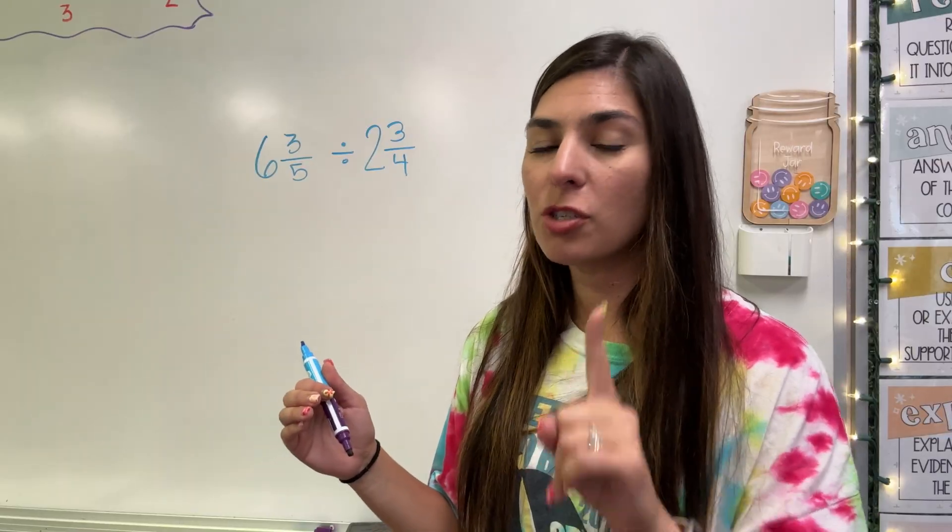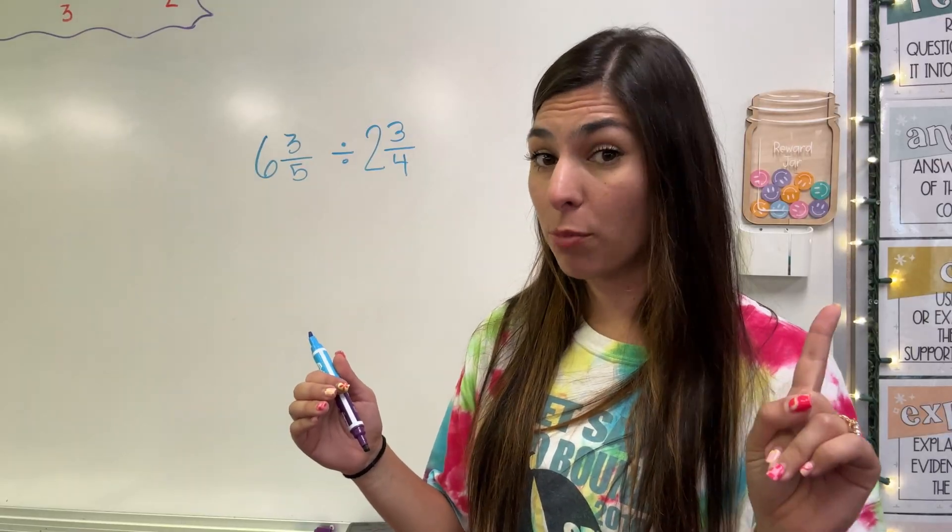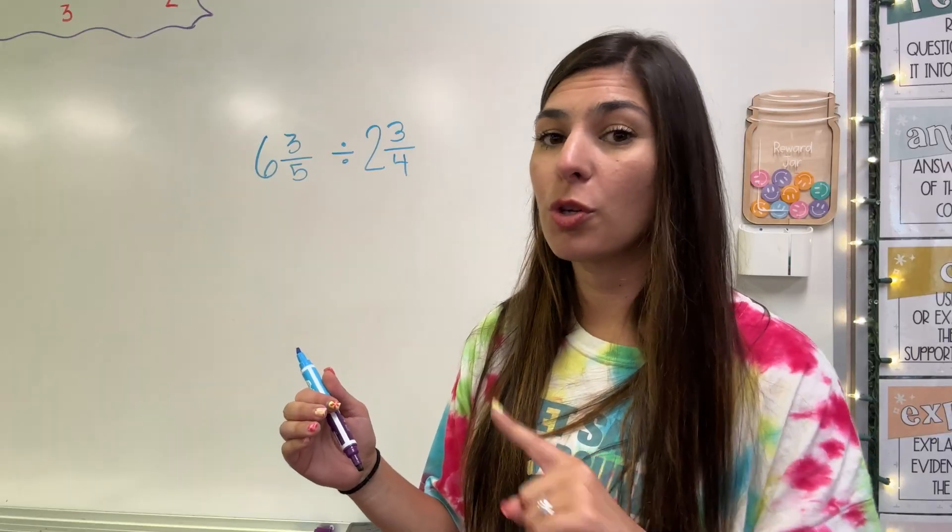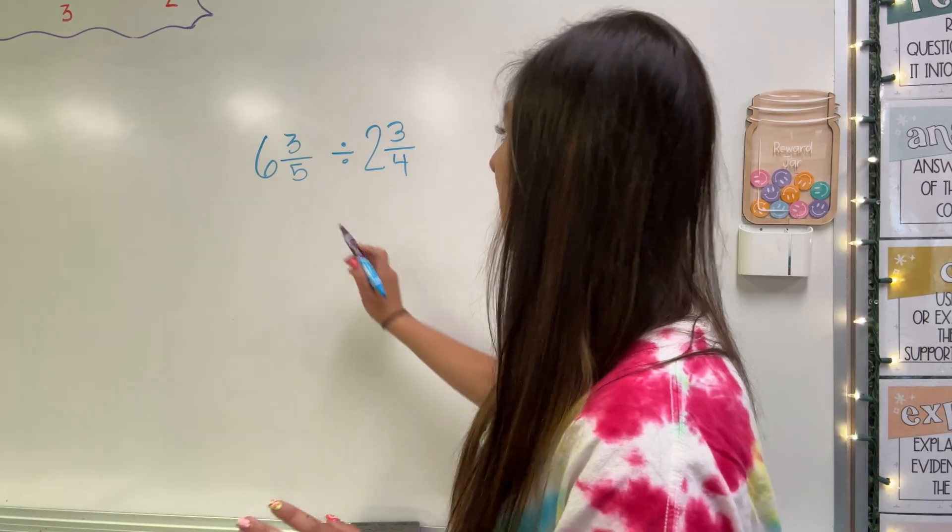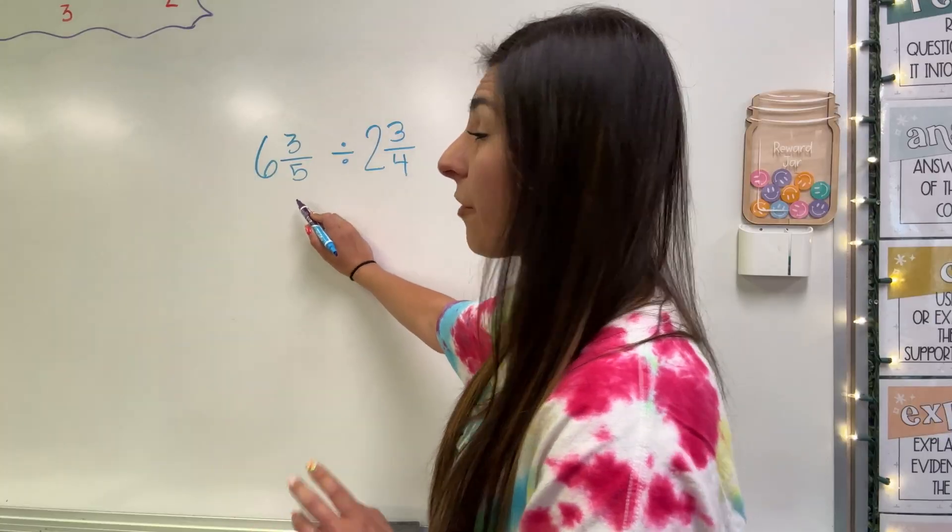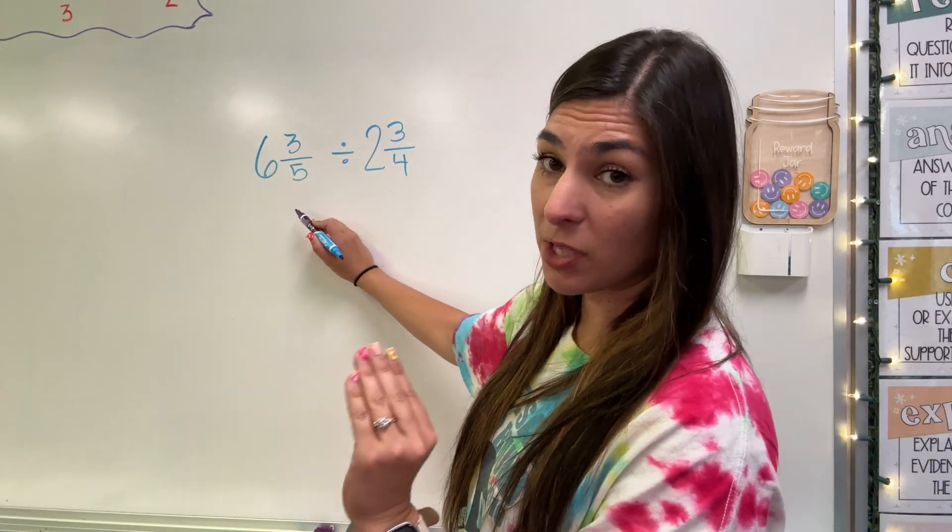Now I have two mixed numbers that I need to divide. In order to do that, I first need to do reverse C method, turn them into improper fractions. And then I will do keep change flip to change that division problem to a multiplication problem. So because these denominators are different, I need to do reverse C method, turn them into improper fractions.